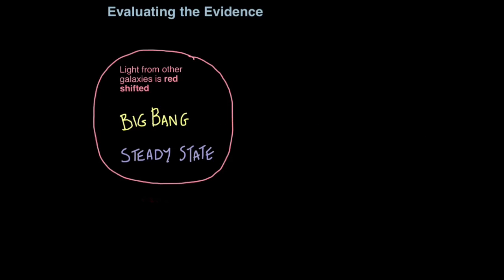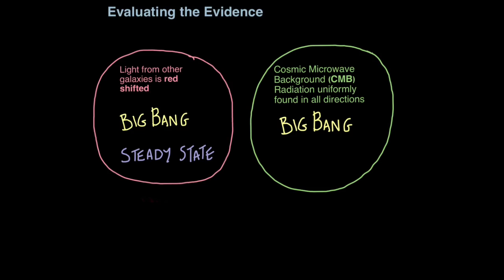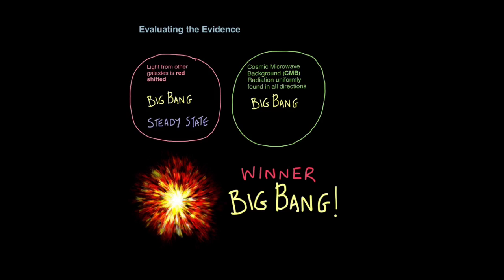So now let's evaluate the evidence that supports each theory and decide which one is stronger or more compelling based on that evidence. Well firstly, scientists have observed that light from other galaxies is red-shifted. This supports both the Big Bang and steady state theory, and that's because both assume space is expanding. This will not make sense yet, but just wait. The second piece of evidence comes in the form of cosmic microwave background radiation, also known as CMB radiation, which is uniformly found in all directions. Now this only supports the Big Bang Theory, and for this reason, we declare the Big Bang Theory the winner. So for your exams, this is probably the most important fact in terms of evaluating the evidence.